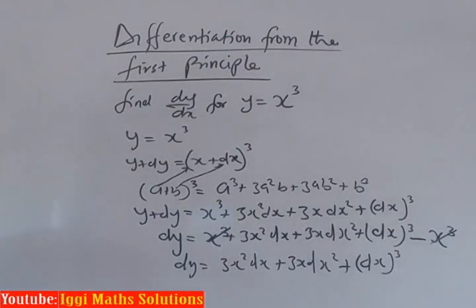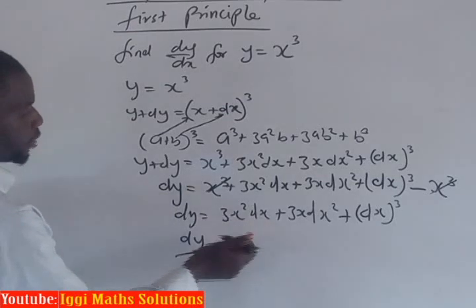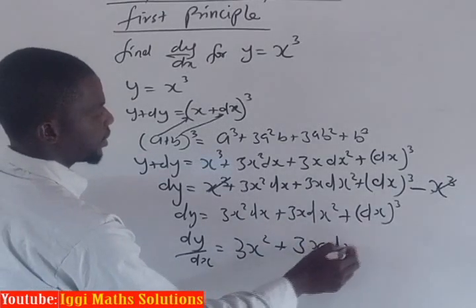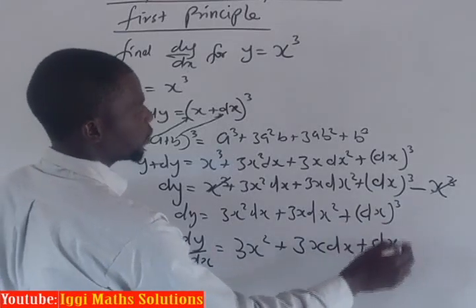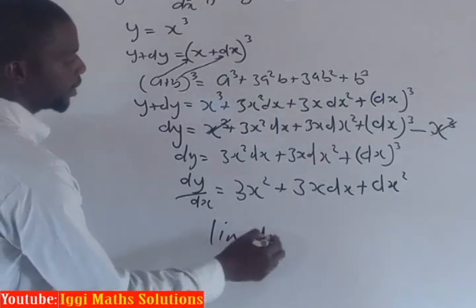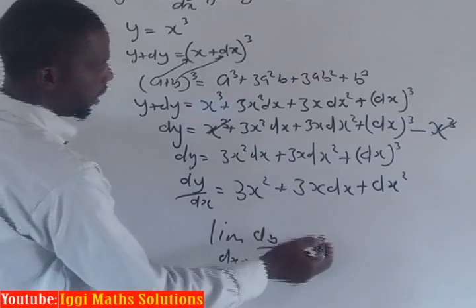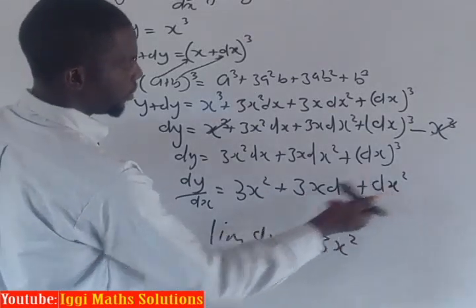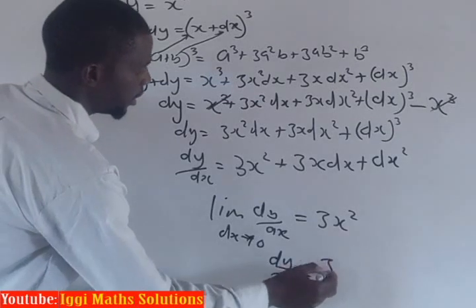Since we are looking for dy/dx, we divide each term by dx. Therefore, dy over dx equals 3x squared plus 3x dx plus dx squared. We then take the limit of dy over dx as dx approaches zero. The terms with dx become zero, giving us dy/dx equals 3x squared.